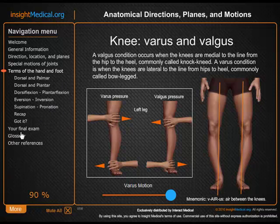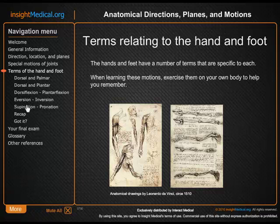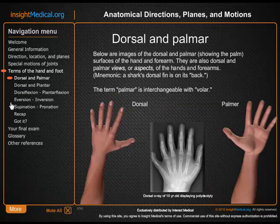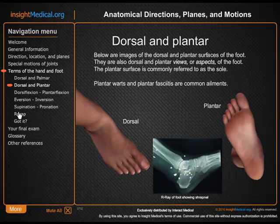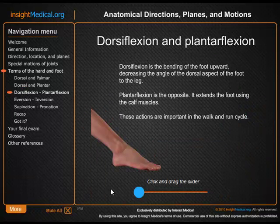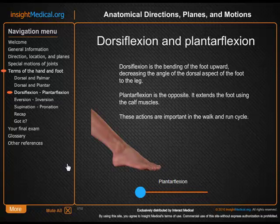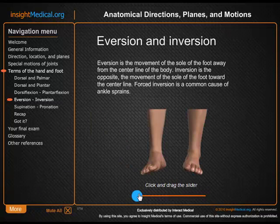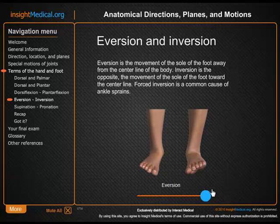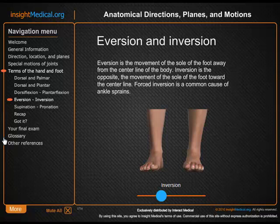We go into special terms of the hand and foot. We look at the dorsal and palmar aspects of the hand, and the dorsal and plantar aspects of the foot. We look at dorsiflexion and plantarflexion with the aid of our interactive animation again, and we can look at eversion and inversion — difficult concepts to understand, but made simple through interactive animation.